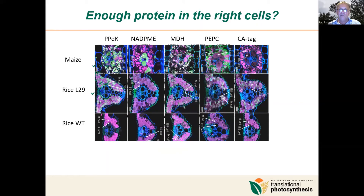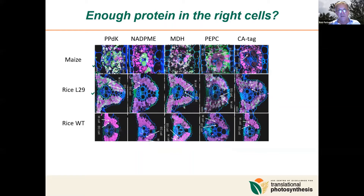These proteins were all in the right place — we got the promoter and transcriptional control of these proteins working pretty well. The mesophyll proteins were expressed in the same compartments as they were in maize. The big disappointment was NADP malic enzyme, which was just detectable and more than wild type, but nothing close to even a few percent of maize levels. What you're looking for here is green fluorescence from the tagged secondary antibody — they're all in the right place.